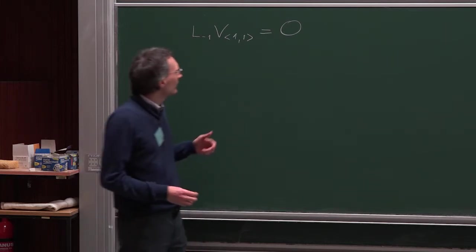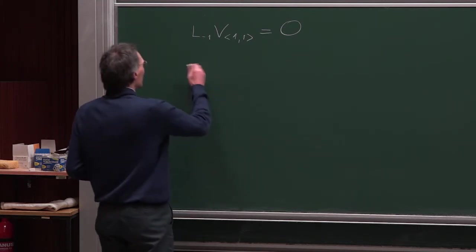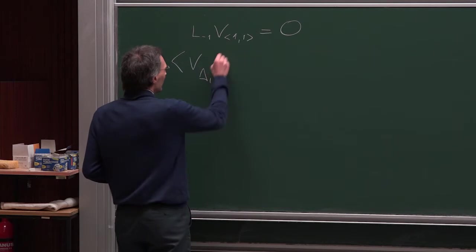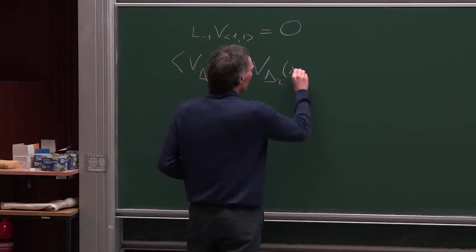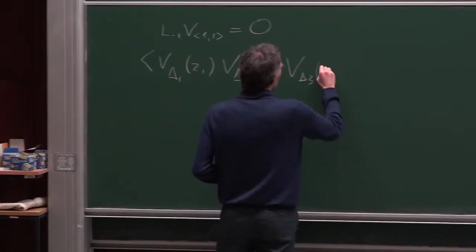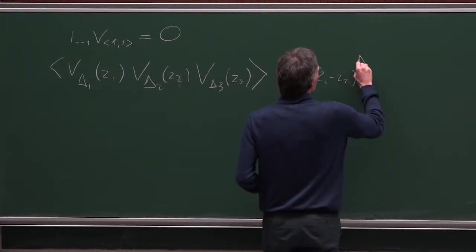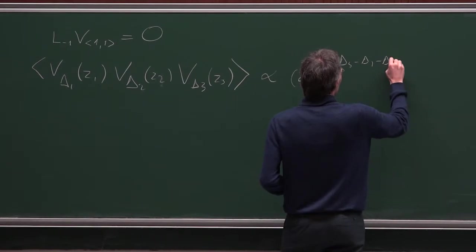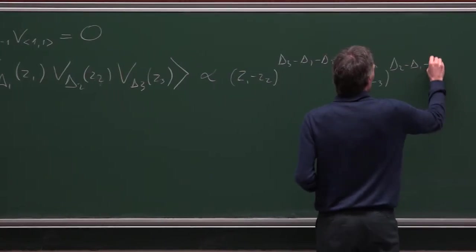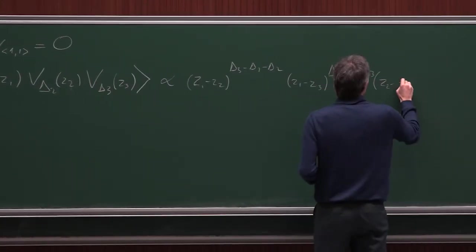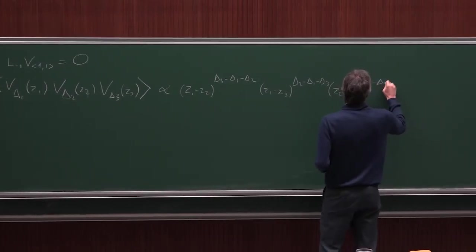What happens if we have a correlation function with this degenerate field? Let's consider a three-point function. As a consequence of conformal symmetry, the three-point function is determined up to a proportionality coefficient. It is (z₁ - z₂)^(δ₃ - δ₁ - δ₂) · (z₁ - z₃)^(δ₂ - δ₁ - δ₃) · (z₂ - z₃)^(δ₁ - δ₂ - δ₃).